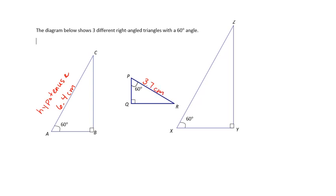Here's my other hypotenuse: 3.7 centimeters — that's opposite my right angle. So if you look at a right triangle, these are my legs, and this is the longest side — that's always the hypotenuse. The hypotenuse of this largest triangle I got 8.6 centimeters.